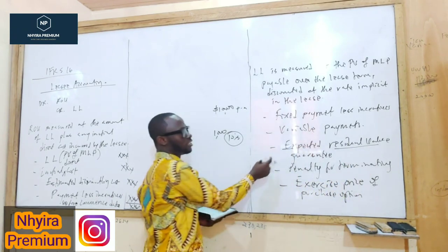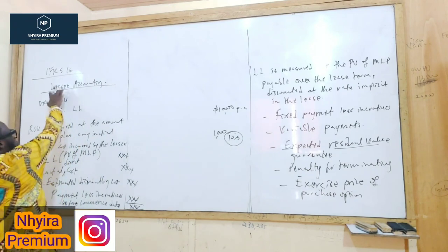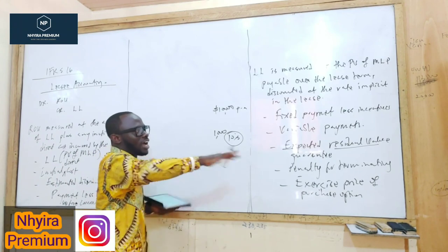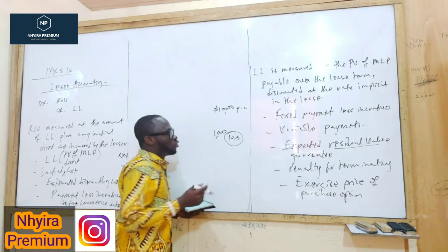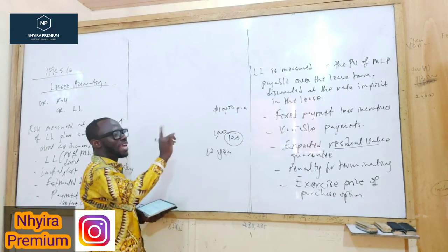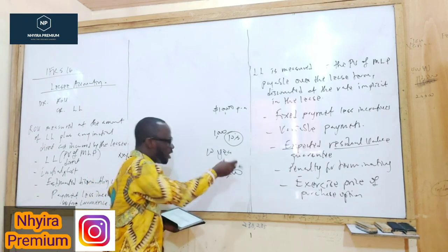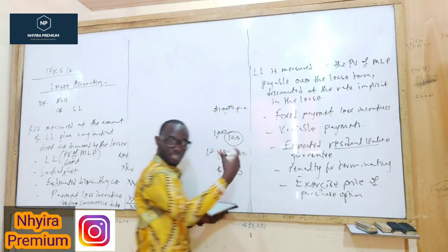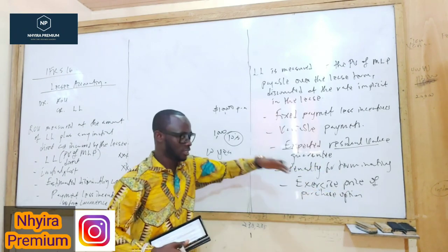The expected residual value that is guaranteed means if the lessor gives you an option to buy the asset, what is the residual value guaranteed in the deal? For instance, if it's agreed that after 10 years you will buy the asset for $2,000, then since you're going to be buying it, you literally owe it to the lessor. Then there's also the penalty for terminating the contract, if that can be reasonably measured.